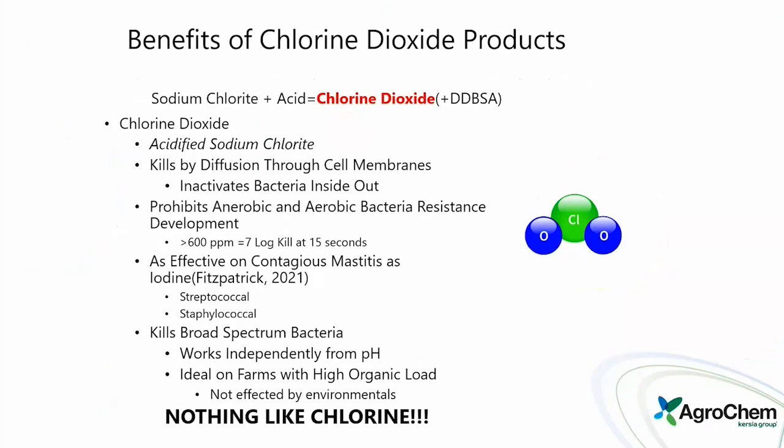Chlorine dioxide works independently of pH, making it ideal on farms with high organic loads and unaffected by environmental conditions. Where other products struggle with high organic loads, chlorine dioxide continues to kill through all of that. It is nothing like chlorine — the name gives a deceptive feel, but it is a completely different chemistry.